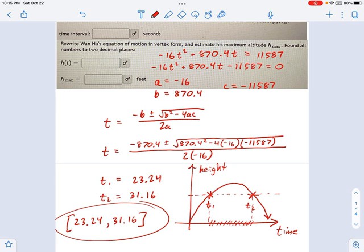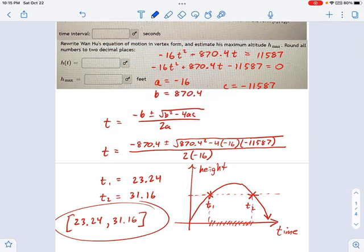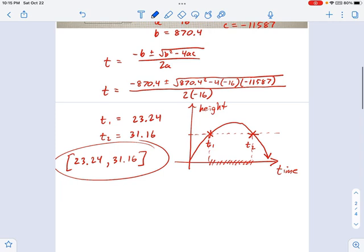That's one task. The second task in this problem is to rewrite Wan Hu's equation of motion in vertex form. Vertex form is very useful because that gives you the maximum altitude. So let's go ahead and do that.